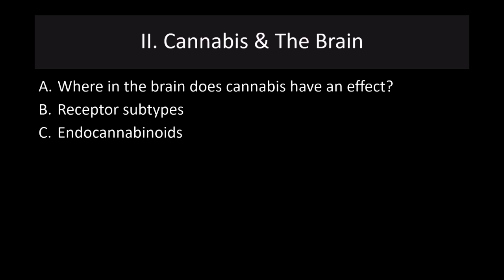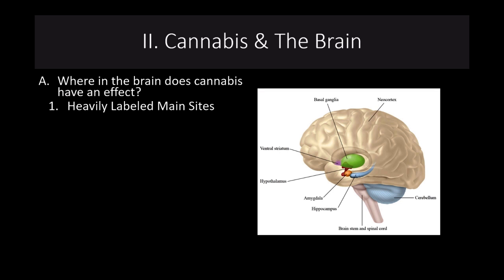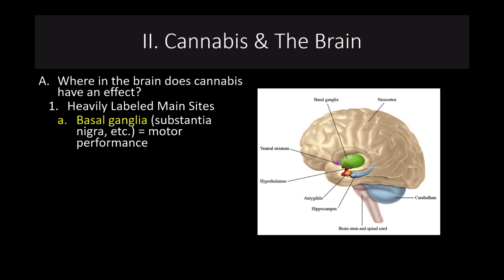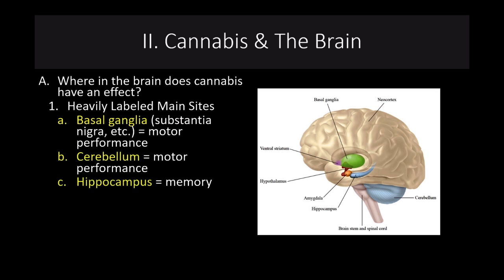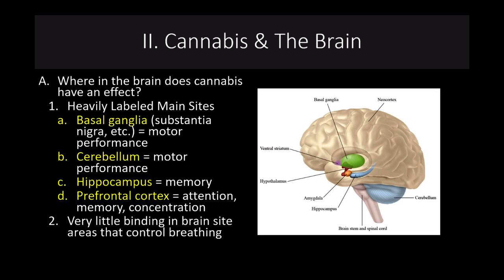Where in the brain does cannabis have an effect? There are heavily labeled main sites in the basal ganglia — this is why marijuana can affect motor performance — and in the cerebellum, again motor performance. Also in the hippocampus, which can influence memory; there tend to be reductions in memory while people are smoking marijuana, but otherwise there don't appear to be long-term effects on memory. There are some effects on attention and concentration, involving the prefrontal cortex. There are very few binding sites in brain areas that control breathing, which is one reason why there are really no overdose deaths — it does not reduce respiration, unlike opiates.